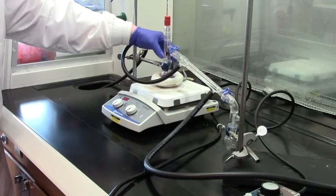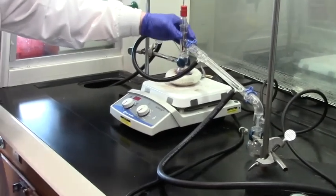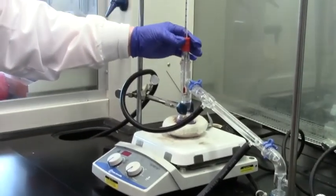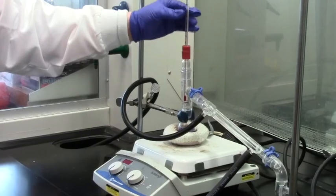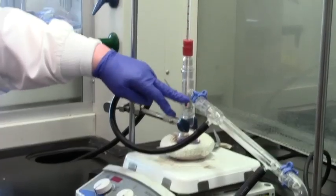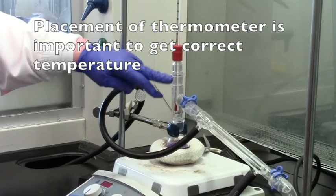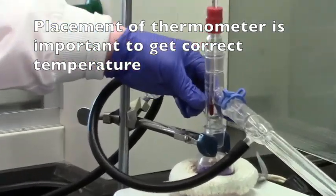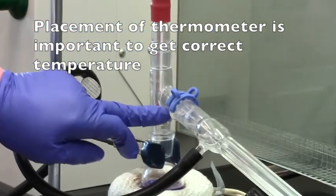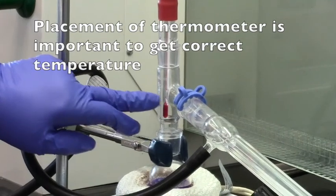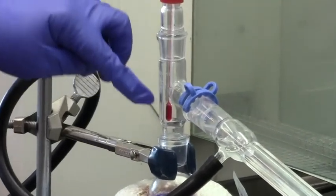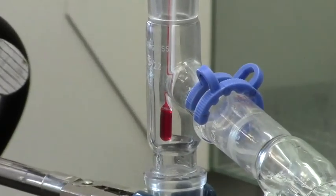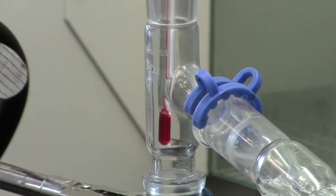This distilling flask is connected to what we call the sidearm, and above that, we have the thermometer adapter, and the thermometer adapter obviously holds a thermometer. It's important that you place the thermometer at the correct position. We like the top of this thermometer to be flush with the sidearm here that you see. If you have it lower than that or higher than that, then when you measure the temperature at which the first drop distills over will probably be incorrect.